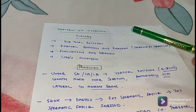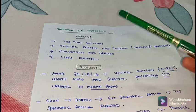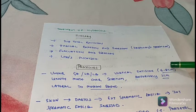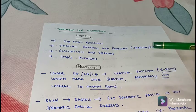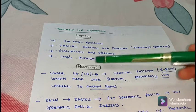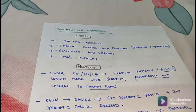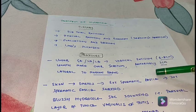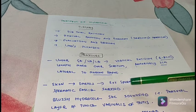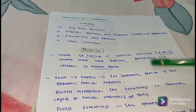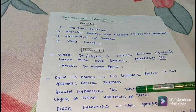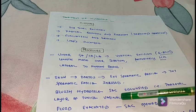The procedure is performed under general anesthesia, spinal anesthesia, or local anesthesia. A vertical incision of about six to eight centimeters is made over the scrotum anteriorly, one centimeter lateral to the median raphe. The skin, dartos muscle, external spermatic fascia, and internal spermatic fascia are incised. The hydrocele sac — that is, the parietal layer of tunica vaginalis — is identified, and the fluid is evacuated and the sac is opened.